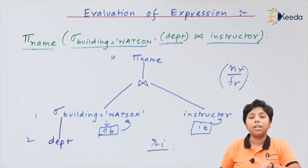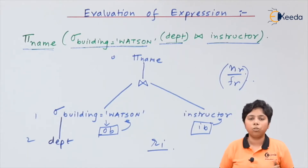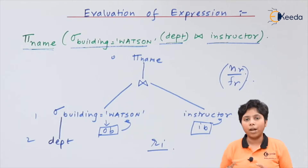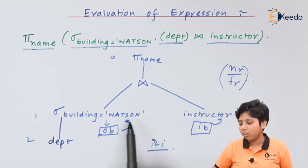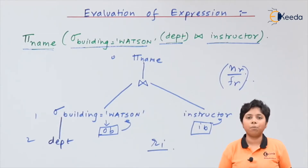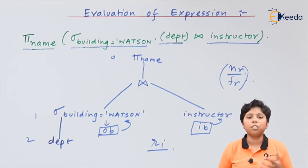The demand-driven pipelining starts with the build input, looks for the tuple that belongs to that input, and waits for a demand — that is, if another query or inner query needs another type of instruction, it checks whether that instruction is available. If the instruction is available, it performs the pipelining. That is the basic idea of demand-driven pipelining.